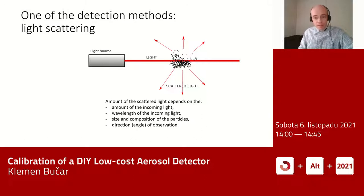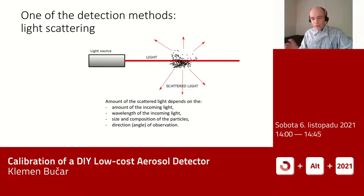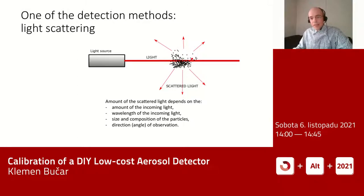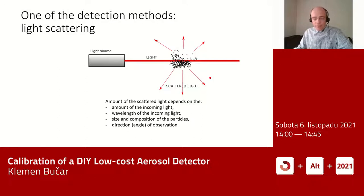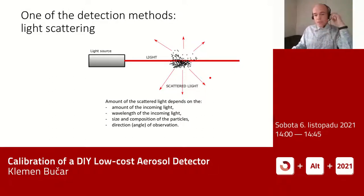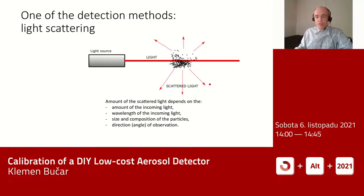Today I will discuss just one of the several possible detection methods for aerosols, and that is light scattering. In this method, we use a light source — a laser or a light-emitting diode — that emits a light beam. As this light passes small particles, it scatters. The amount of scattered light depends on the amount of incoming light, the wavelength, the size and composition of the particles, and also on the angle of observation. Some directions are preferred over others — that is the reason why the sky is blue.